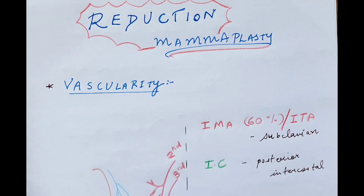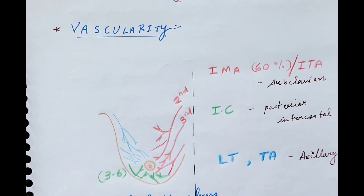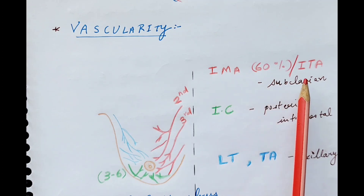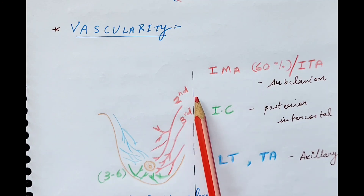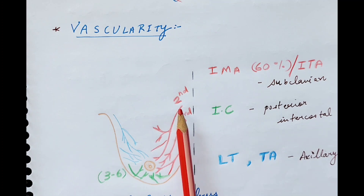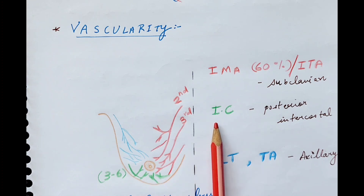Just a quick recap on the vascularity in breast surgery. The most important blood supply is through the internal mammary artery (IMA), also known as the internal thoracic artery, which is a branch of the subclavian artery. This accounts for 60% of blood supply. The second and third perforators are the main ones supplying the breast. Considering the midline, the main supply comes from the superior and medial side of the breast. Towards the inferior pole there is an anastomal network coming from the medial as well as the lateral side, mainly from the intercostal arteries.